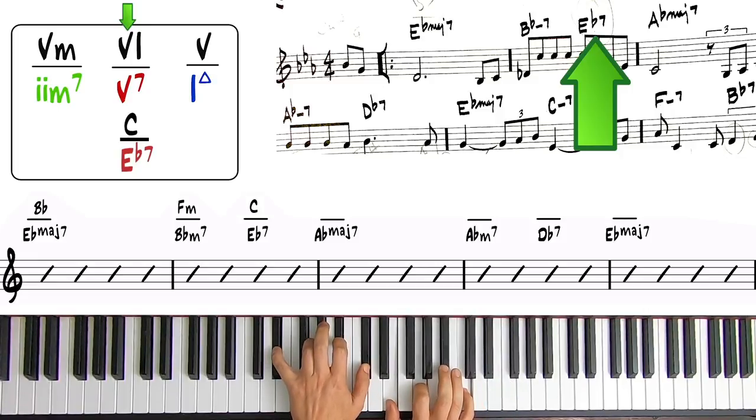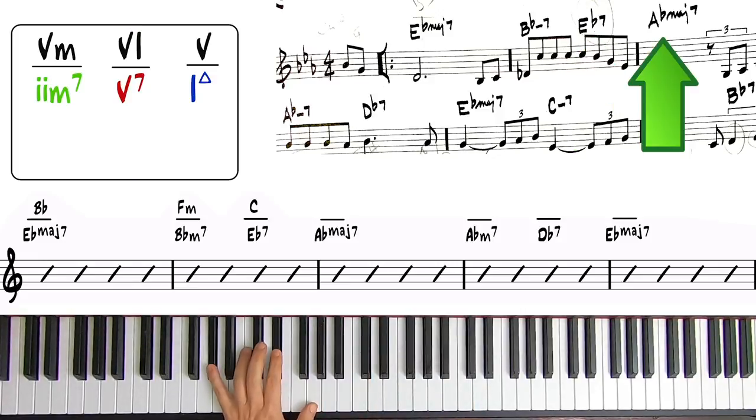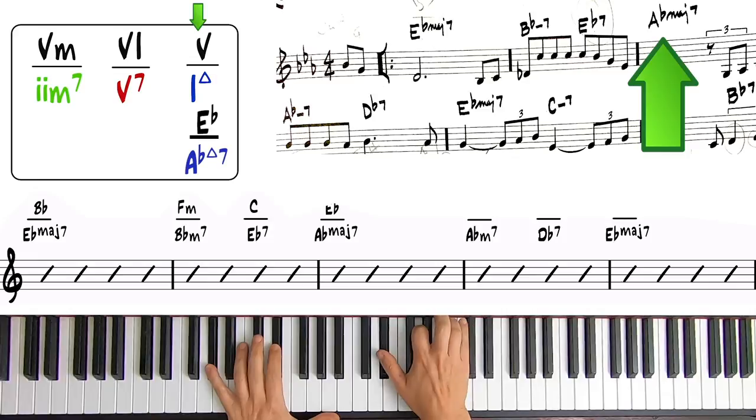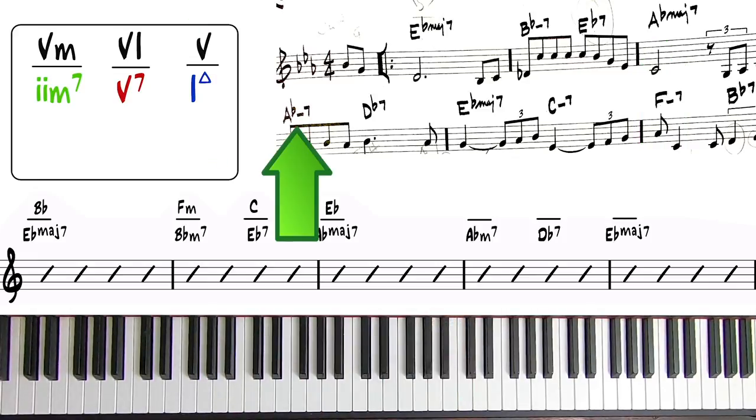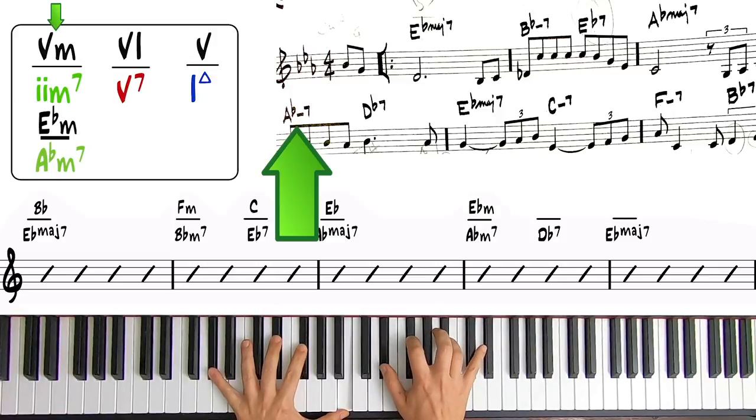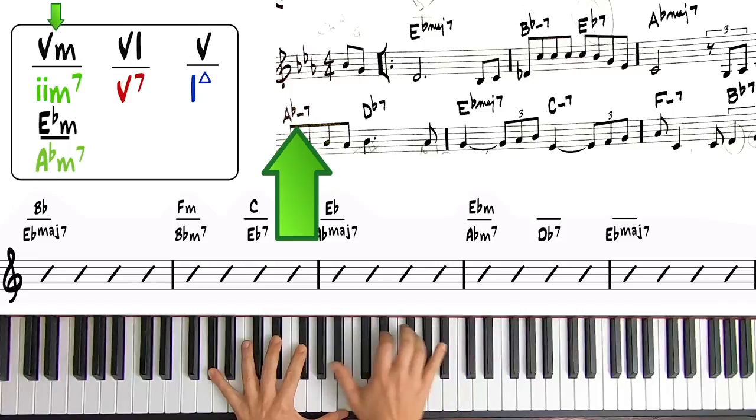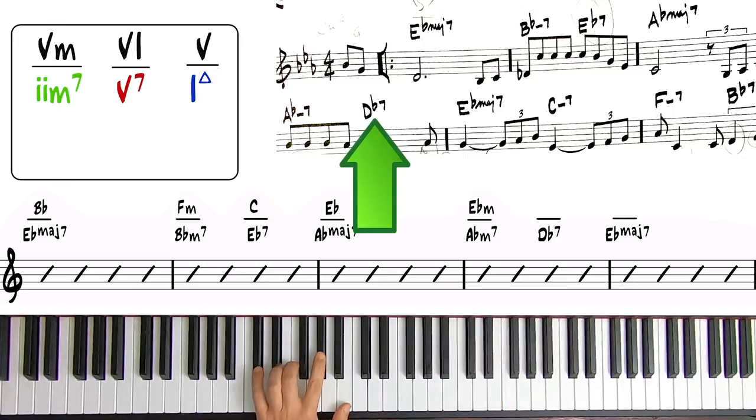On the downbeat of measure three we go back to the major seven chord, we have an A-flat major seven, so that's five major over A-flat major seven—E-flat over A-flat major seven. Then we move to an A-flat minor seven, there's our five minor upper structure, so we get E-flat minor over A-flat minor seven. Remember, the five of A-flat is E-flat—that's what we're basing all these upper structures on.